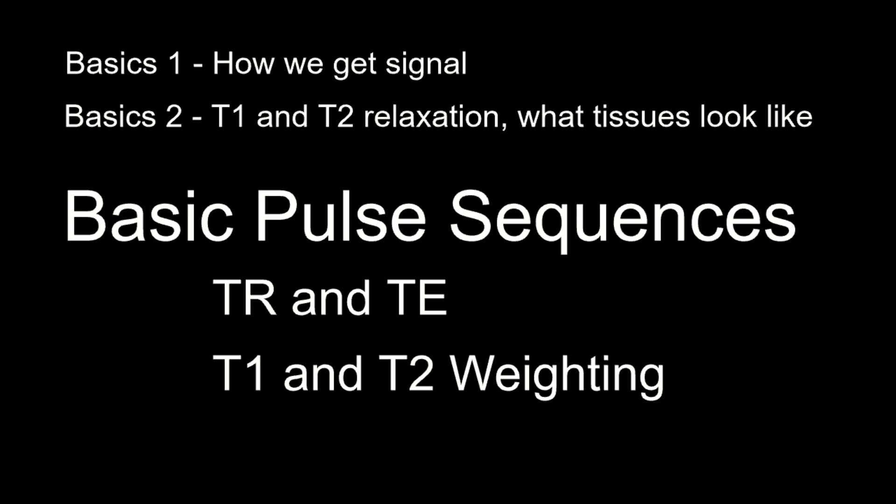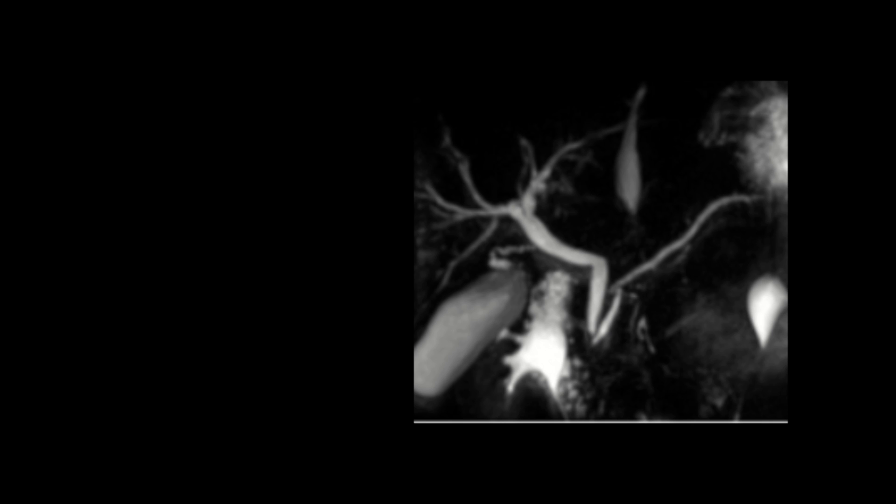This video will introduce basic pulse sequences, including the concept of pulse sequence parameters TR and TE, and how those parameters can be manipulated to get T1-weighted and T2-weighted images. Then we'll illustrate those concepts by showing you how we get MRCP images. It's tough to do justice to this topic in a short video, so if this gets a little confusing, don't worry. Just keep watching and understand the key principles: short TRs emphasize T1 effect and long TEs emphasize T2 effect.